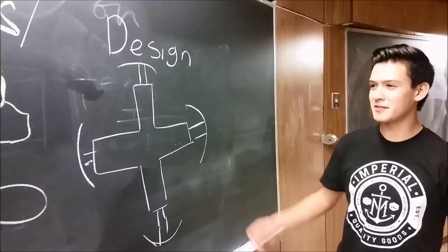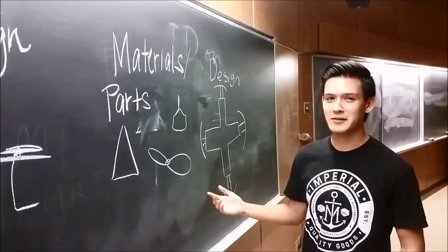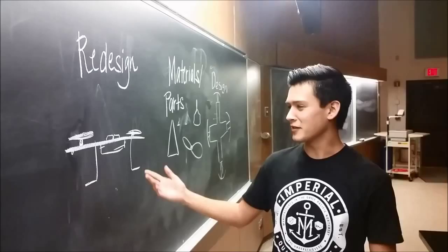The first step in our design process is coming up with an initial design on SolidWorks. Next, we chose our materials, which consisted of core plastic, 6-inch propellers, and a SunnySky 209s. But then we ran into some issues, so we had to do some redesign.